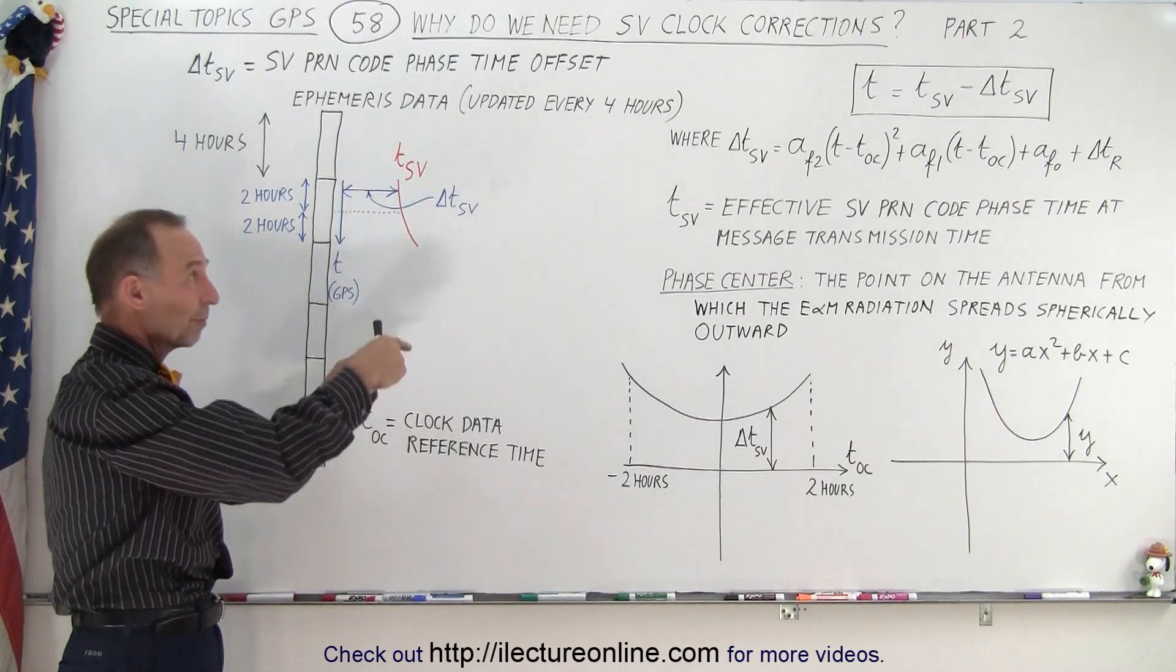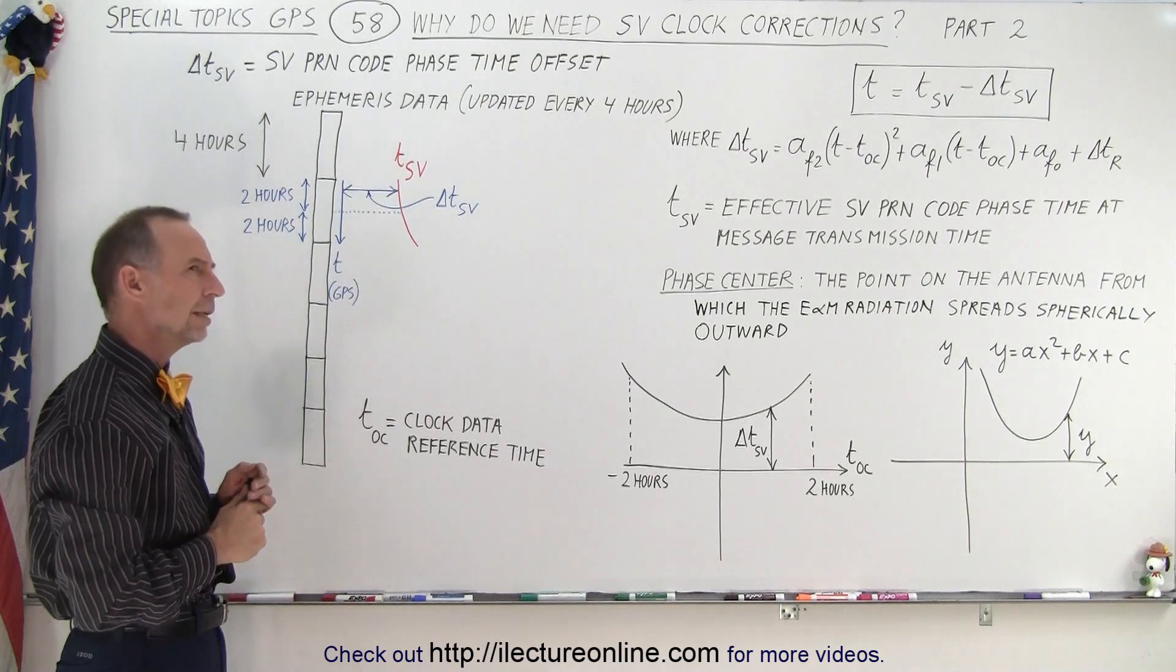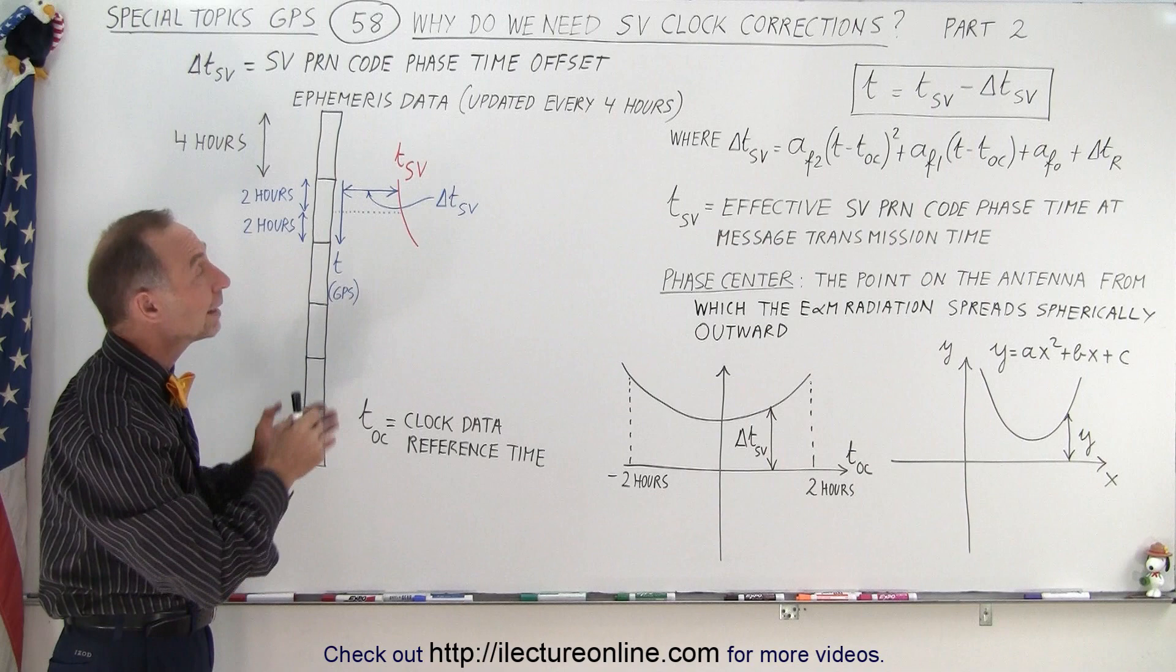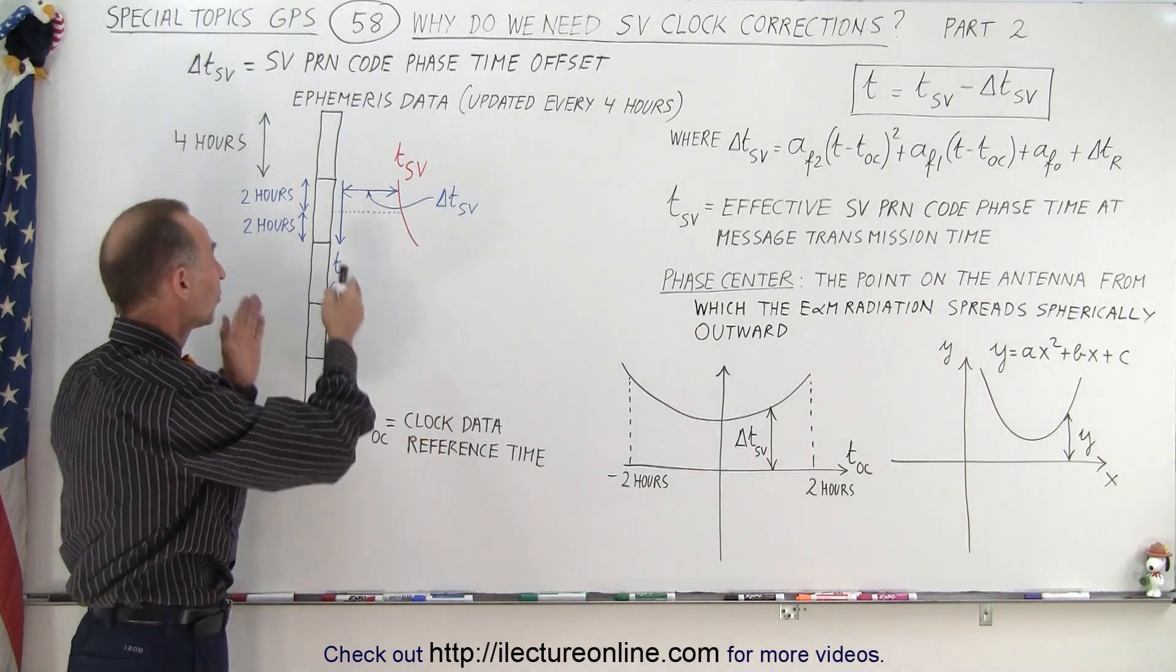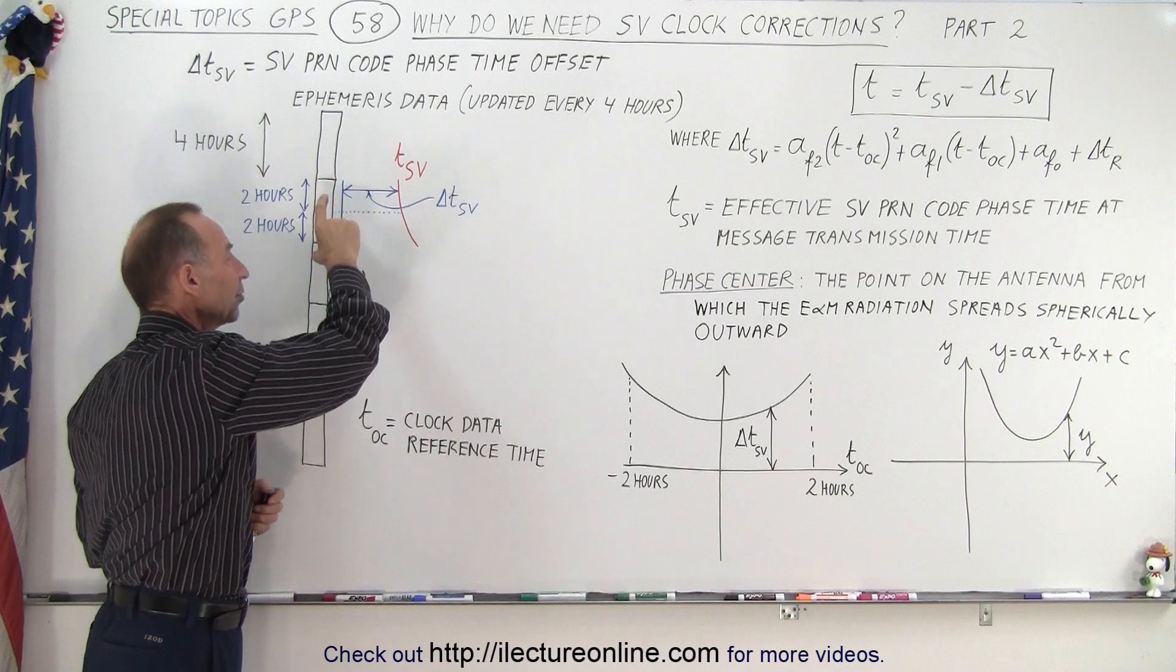And so we can do that by sending those parameters every subframe. I believe those are in subframes nine and ten, and so that then gives us the information we need to update the ephemeris data which is the orbital parameters of that particular satellite.